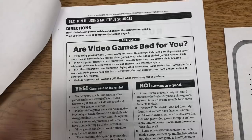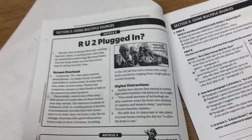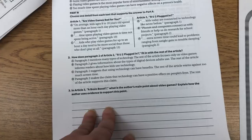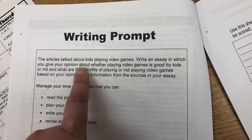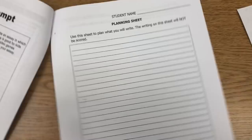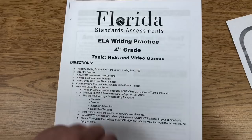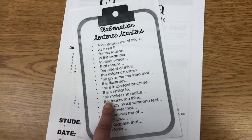This text set has three articles: one covers both yes and no sides, one is against video games, and one is for them. Students have questions to answer based on those sets. I also added an FSA-based writing prompt — a two-part prompt: 'The articles talked about kids playing video games. Write an essay giving your opinion about whether playing video games is good for kids or not, and what are the benefits of playing or not playing, based on your opinion. Use information from the sources in your essay.' I included a planning sheet where they gather evidence and create a plan, plus three lined pages to write their essay. They got it today Monday and it's due Friday.